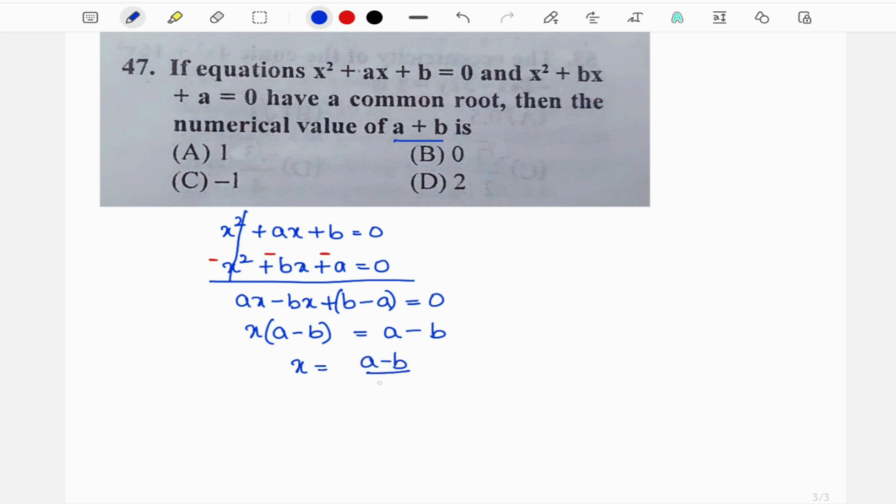Now a minus b on either side gets cancelled, so we will have x is equal to 1. So x = 1 is one of the roots of this equation. What do you mean by root of an equation?